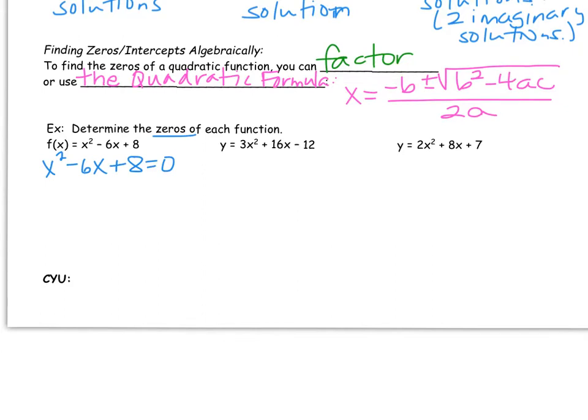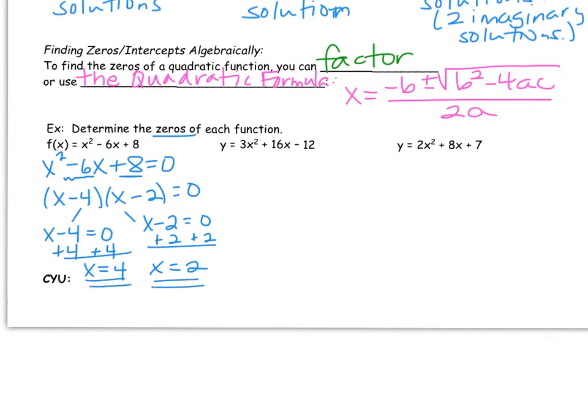In this case, if we look at numbers that multiply to get 8 but add to get negative 6, this factors pretty quickly into x minus 4 and x minus 2. And you can write them in either order. If you set that equal to zero, we apply what's called the zero product property. Literally set each parenthesis equal to zero and then solve for x on its own. We get one of our answers to be x equals 4, and the other answer would be 2. That means this quadratic function crosses the x-axis at two locations.